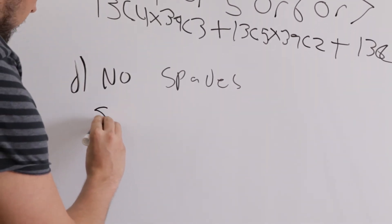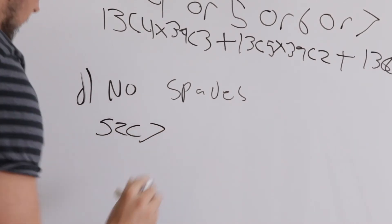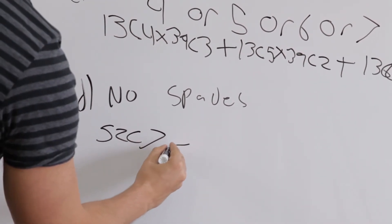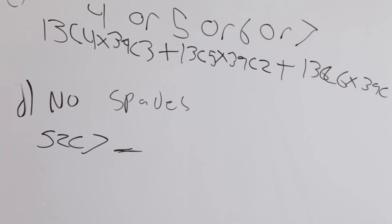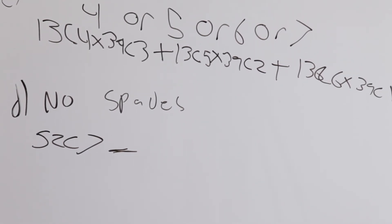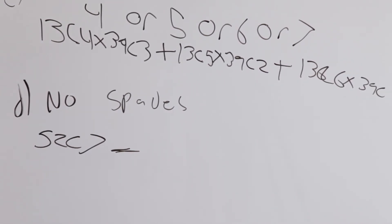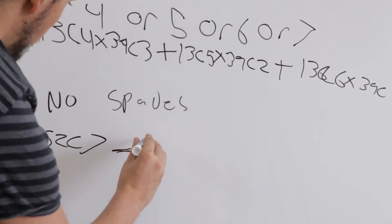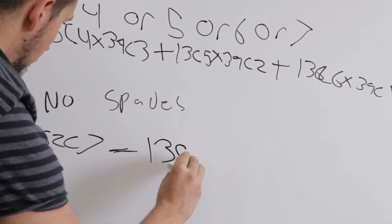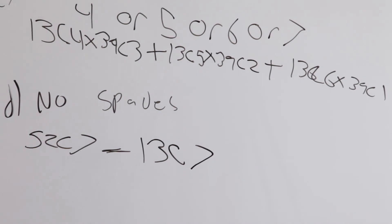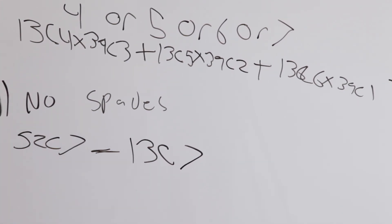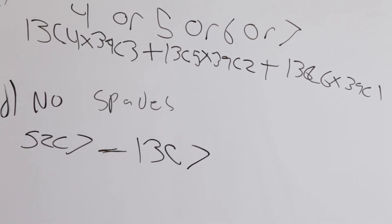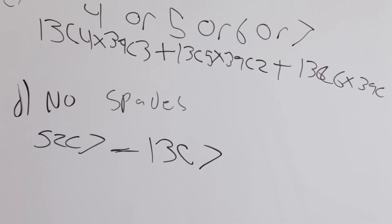52 choose seven. So that's the total and now we're going to take away the opposite. So no spades, the opposite of no spades is all spades. So that would be choosing only spades, seven cards all spades. So the total number of spades is 13 and we'd be choosing all seven from it. So that's how you do no spades. So anytime you see the word no you know you're going to probably use the indirect method. Total minus what you don't want equals what you want.